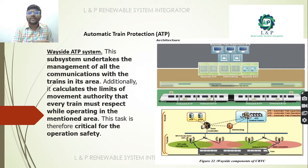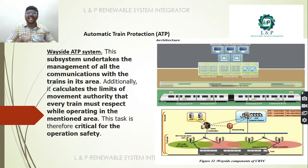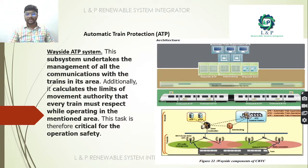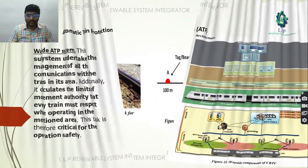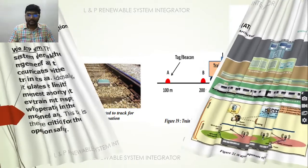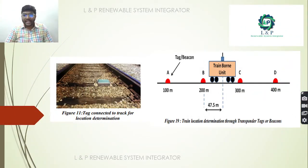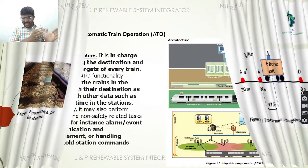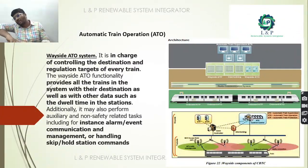The wayside ATP (automatic train protection) is a subsystem that manages all communication with trains in its area. It also calculates the limits of movement authority that every train must respect while operating in that area, playing a critical role in operational safety. Tags connected in the track sense the exact position of the train using a receiver and transporter to relay signals.